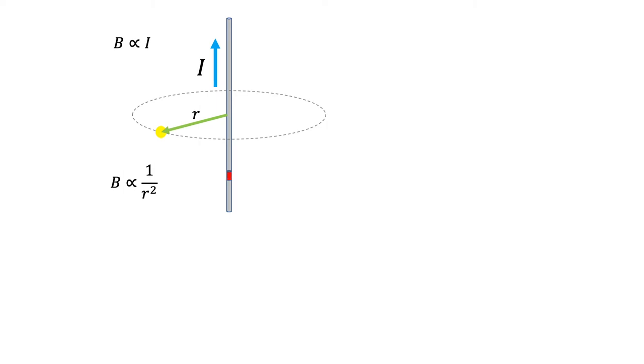Now, let's consider an infinitesimal element of current and call it DL or vector DL later. Let's transfer this DL here and draw the direction of the current element.